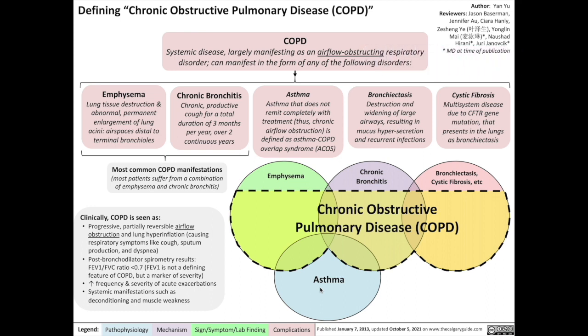Let's get started. COPD is a systemic disease largely manifesting as an airflow-obstructing respiratory disorder. It can manifest in the form of any of these five following disorders.